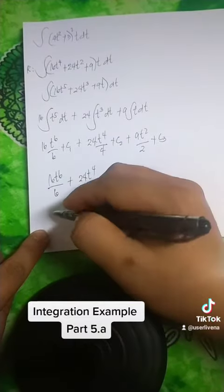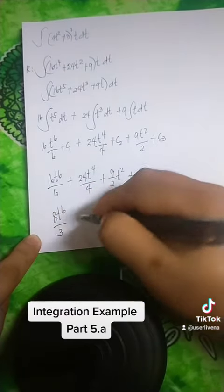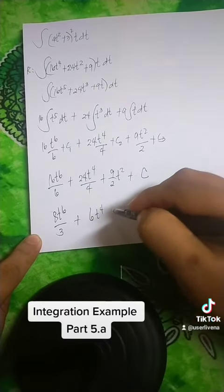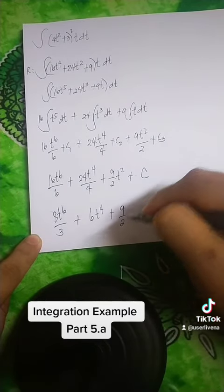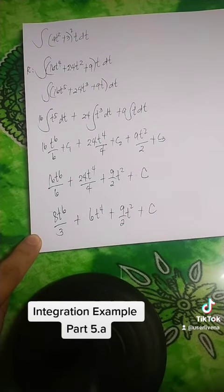Then, by dividing this one by 2, you've got 8t to the 6th over 3 plus, this one is 6t to the 4th plus 9 over 2t squared plus c. This is the first solution.